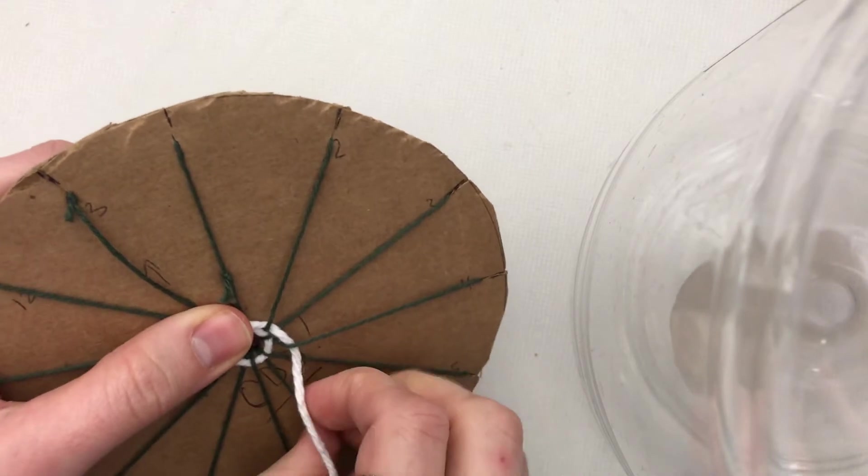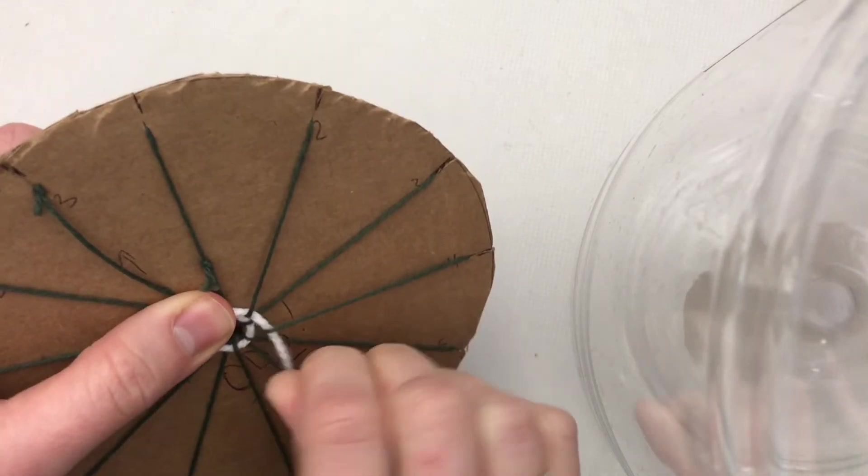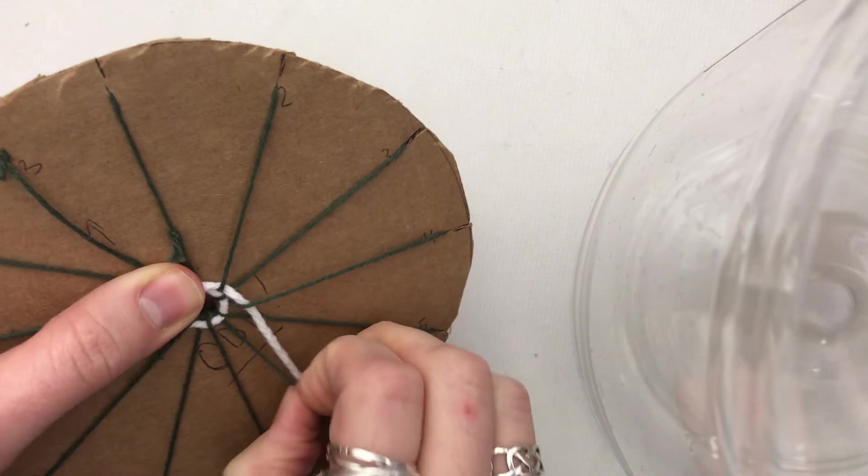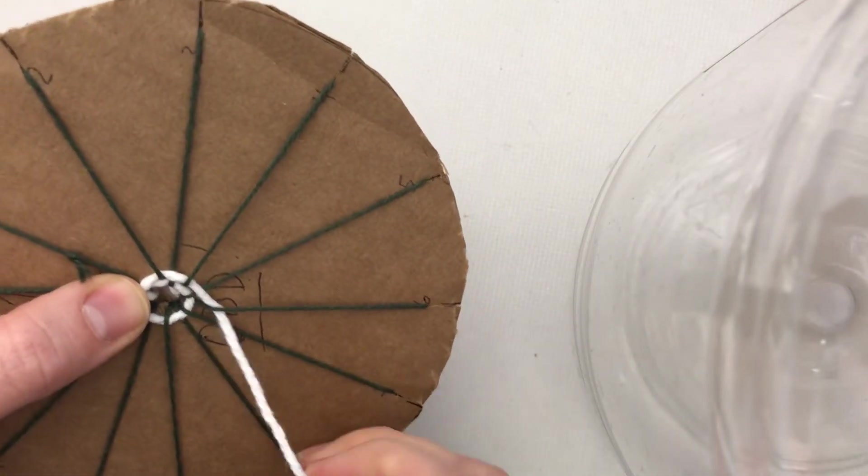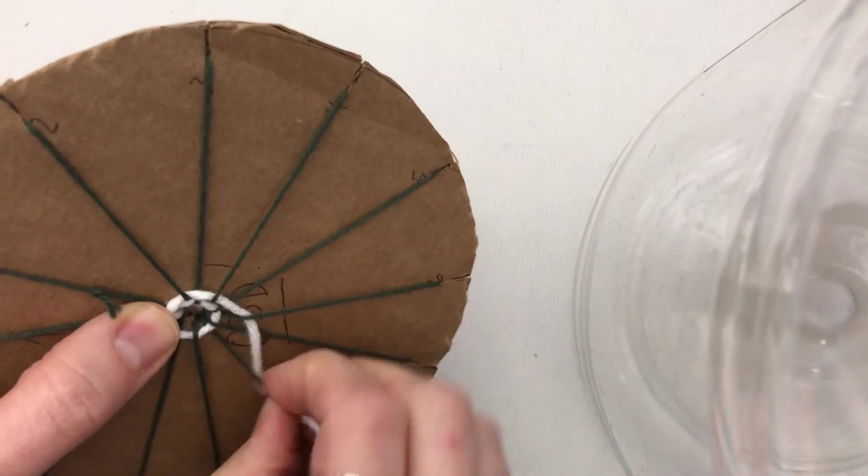It won't actually be a weaving. It will be just yarn over top. It will be over, over, over every time you go around. So again, I'm back at seven. So over seven, under eight.